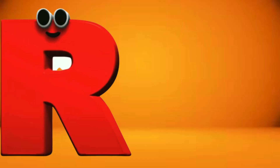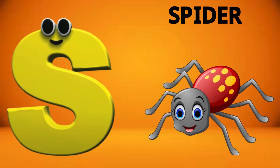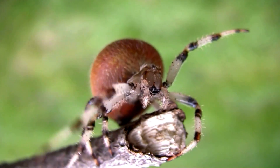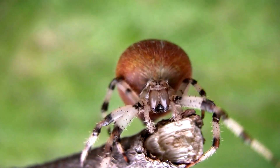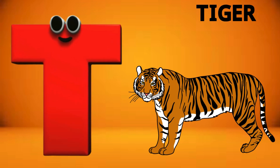R is for rainbow. Rainbow, rainbow. R, rainbow. S is for spider. Spider, spider. S, spider.